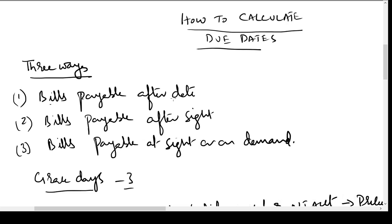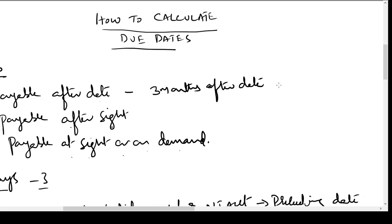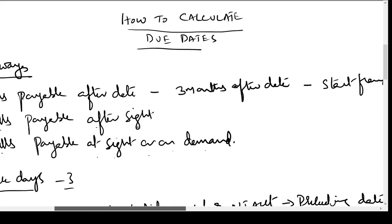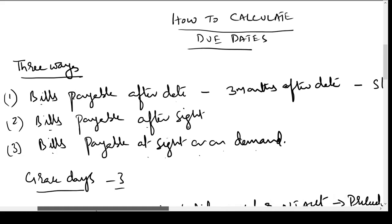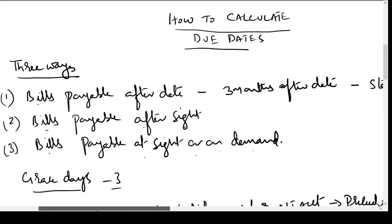That is: bills payable after date, bills payable after sight, and bills payable at sight or on demand. Bills payable after date — for example, when the bill says 'three months after date' — means the duration of the bill will start from the date of drawing of the bill by the drawer. The meter will start on that date.